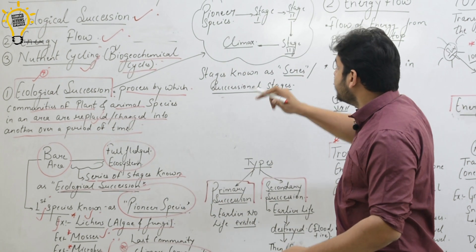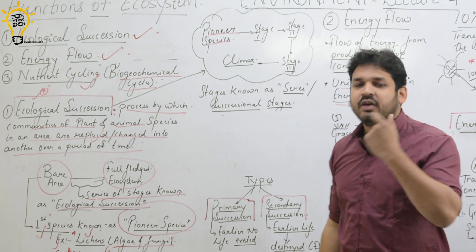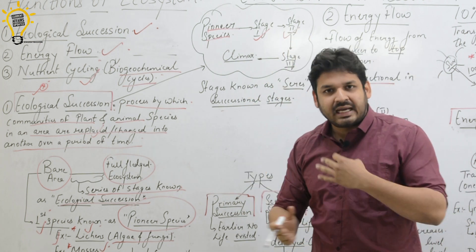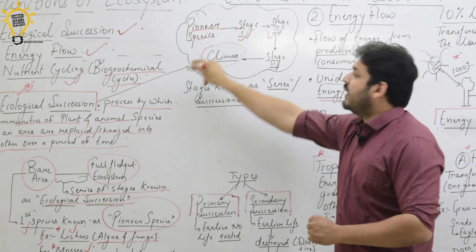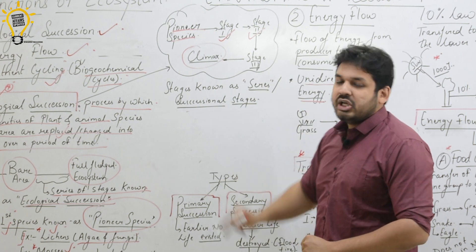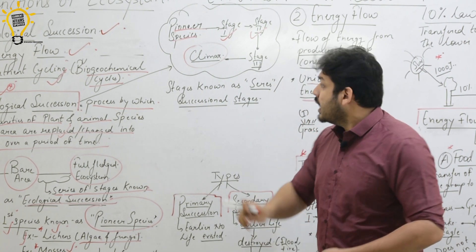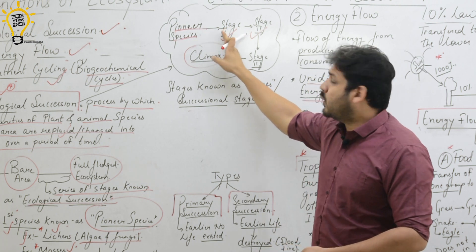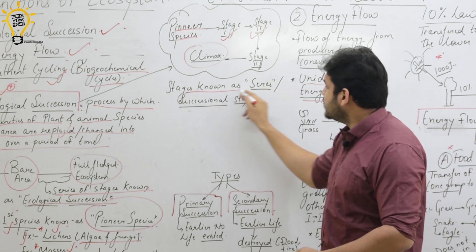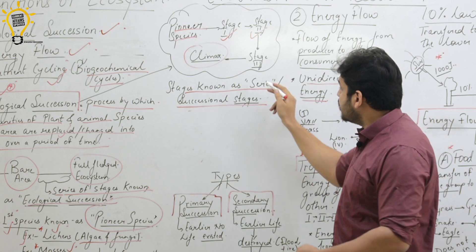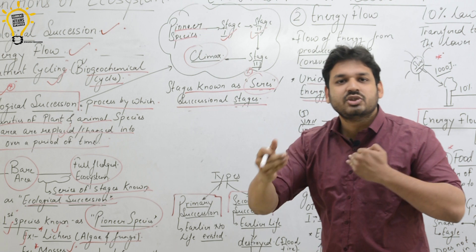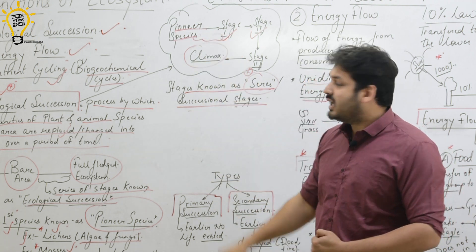Here I have written: pioneer species develops first, then stage one changes, then stage two changes, and so on. This is the final stage, called the climax. The whole process is called ecological succession. I have written a few stages — stage one, two, three — as successive stages, and the whole process is ecological succession.